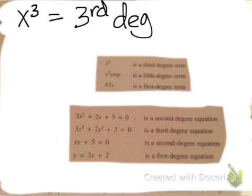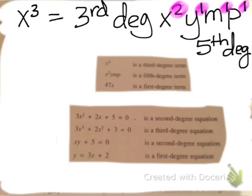So for the first example, x to the third is a third degree term. x squared ymp, you have to look at the powers of each of the variables and then you add them up. So x squared ymp is a fifth degree term.